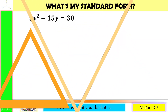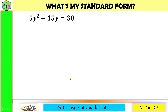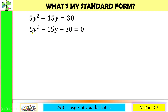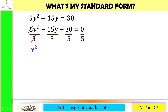Let's have an activity: What's my standard form? In this equation, the first thing you are going to do is move 30 to this side — it will become negative 30 — then equate to 0. Notice that 5, 15, and 30 are all divisible by 5, so let us divide everything by 5. We get y squared minus 3y minus 6 equals 0. This is now the standard form of this equation.